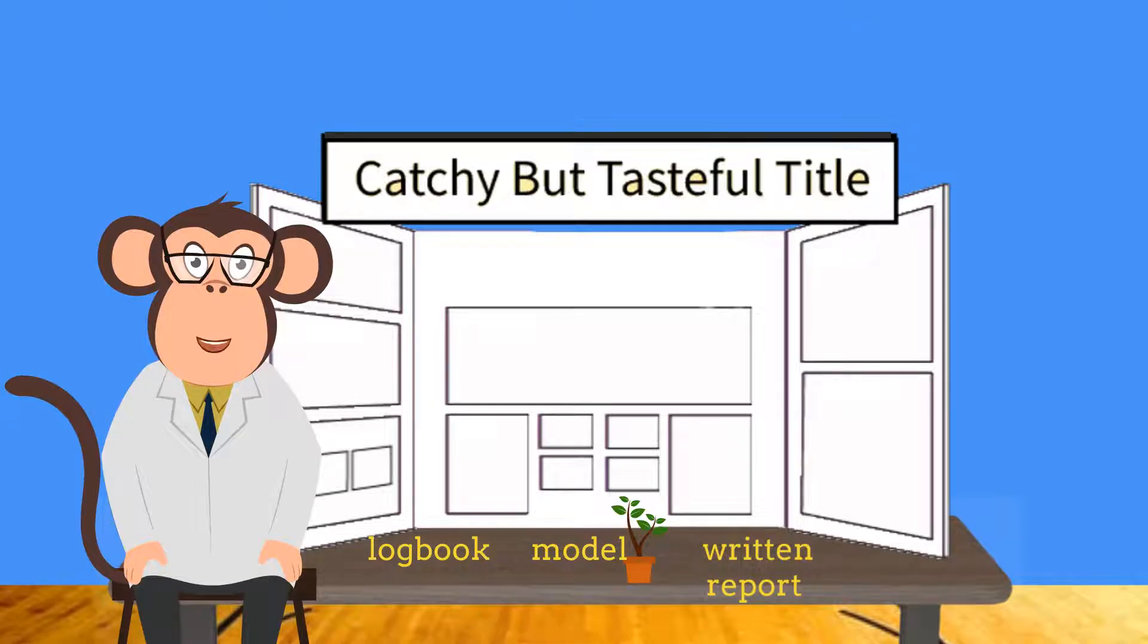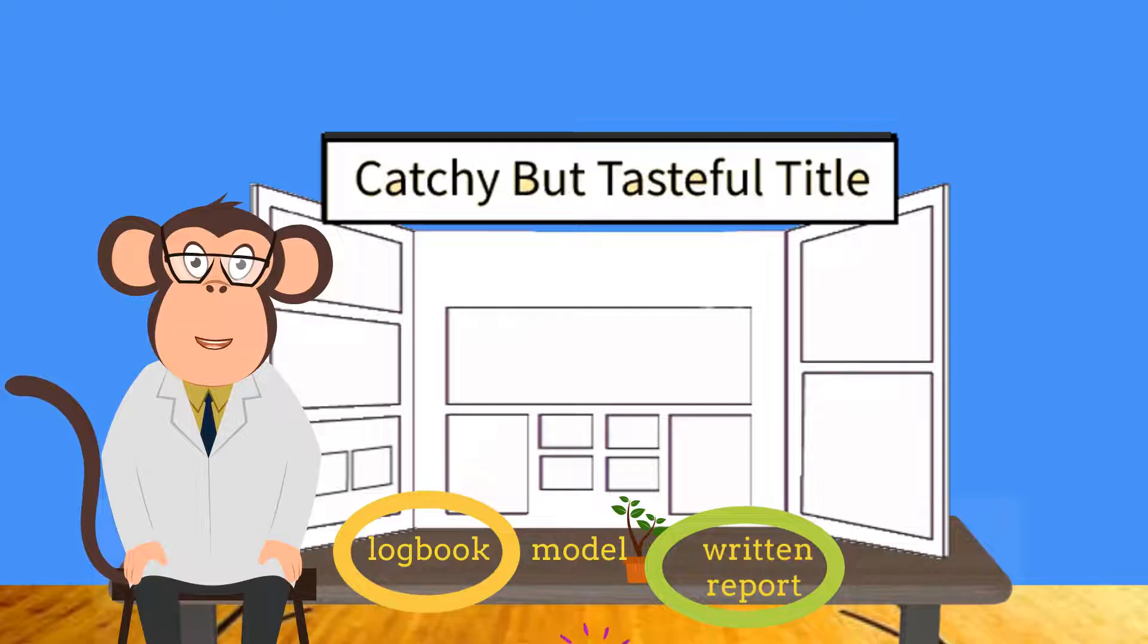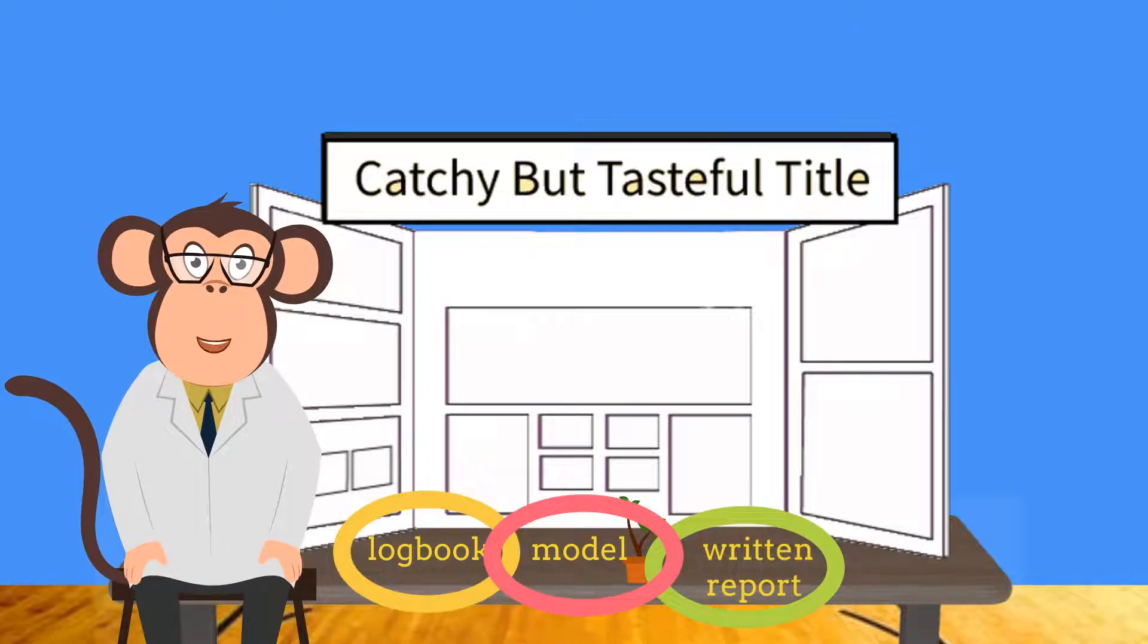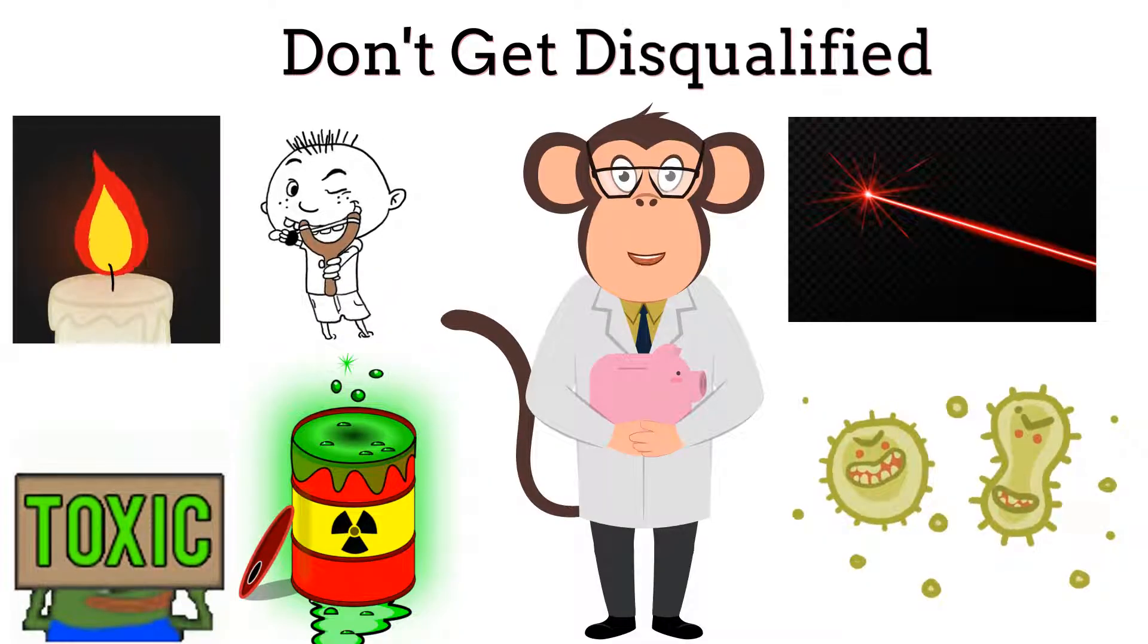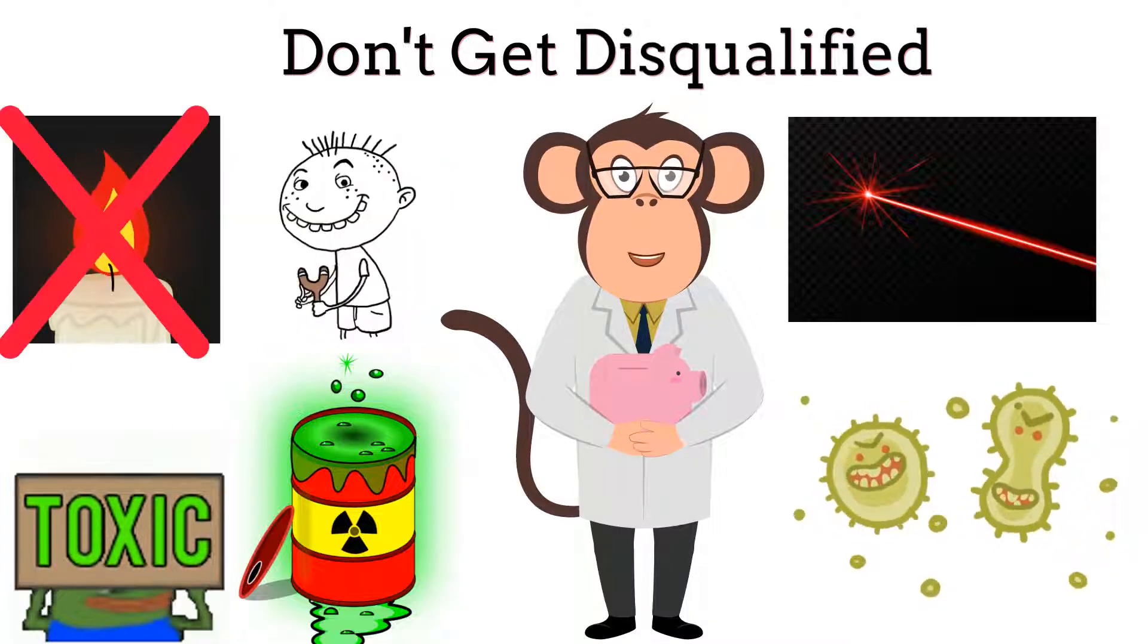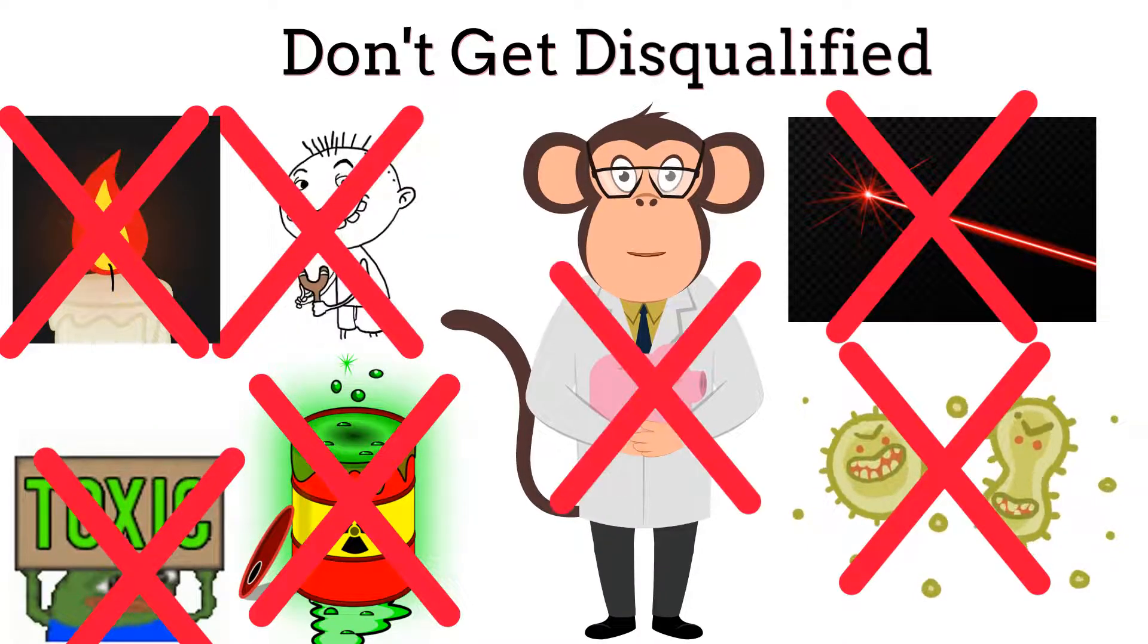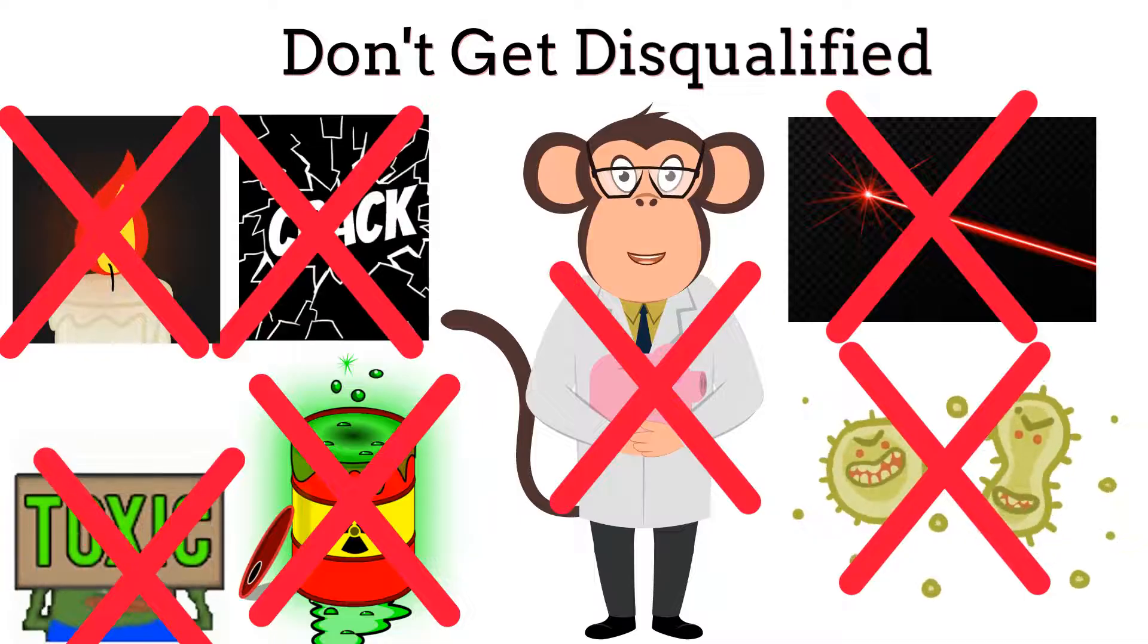Also, keep in mind that you can use the space in front of your display board for your logbook, your written report, and any approved items that you would like to display. It's a great place for a model or simulated model of your work that can help others see what you did. Items in front of your display board should not obstruct it. Be careful with what you choose to display, as you will be disqualified from the fair if you display prohibited items such as open flames, weapons, toxic and radioactive items, lasers, pathogens, and live animals. It's best to check with your science fair for a complete list of prohibited items.